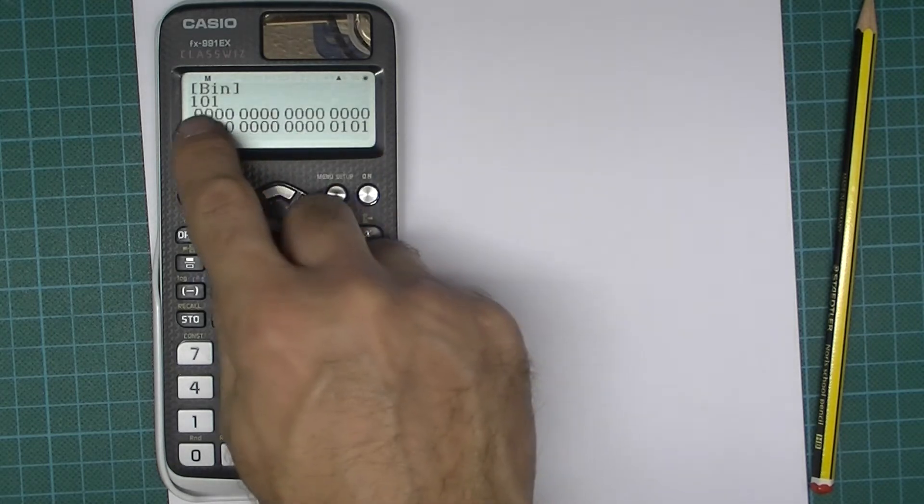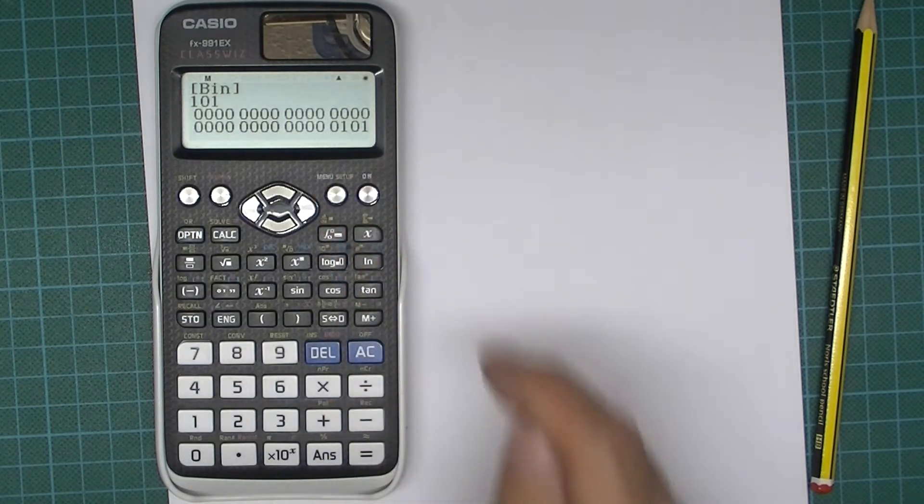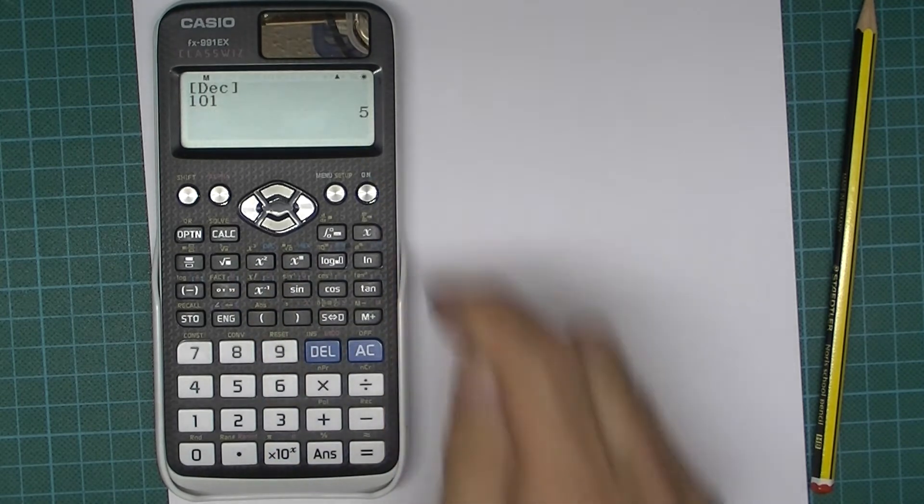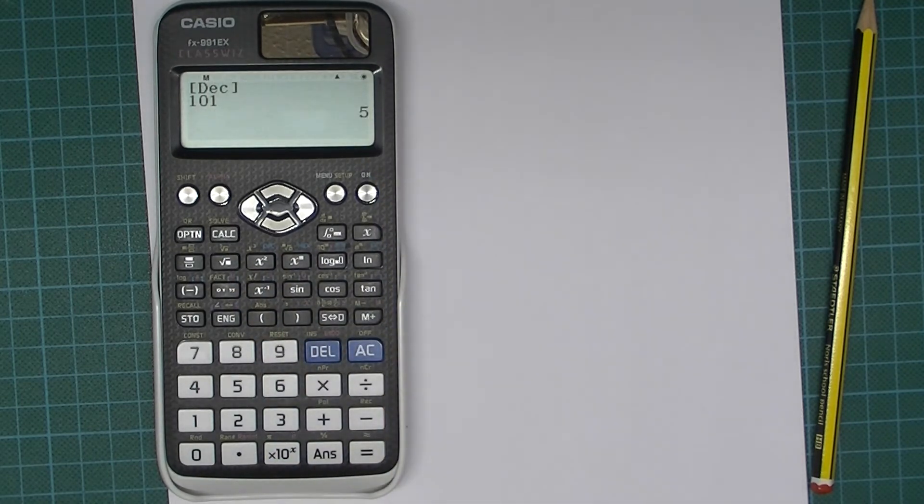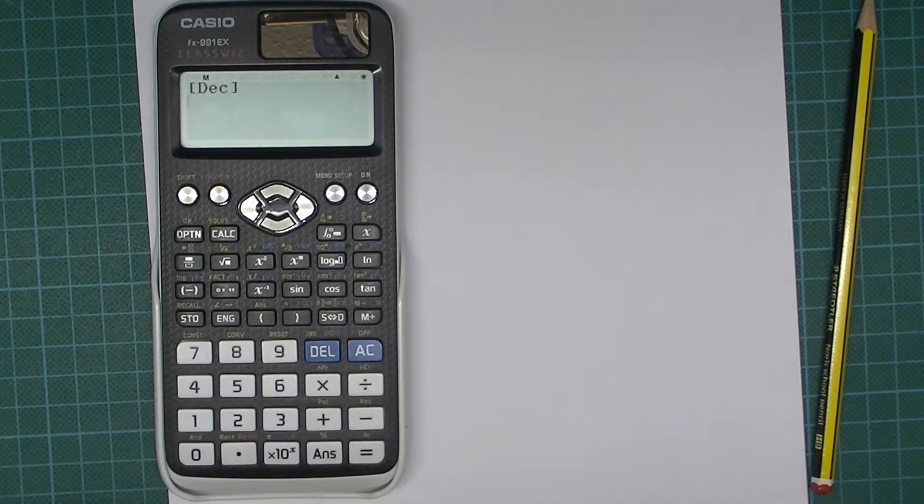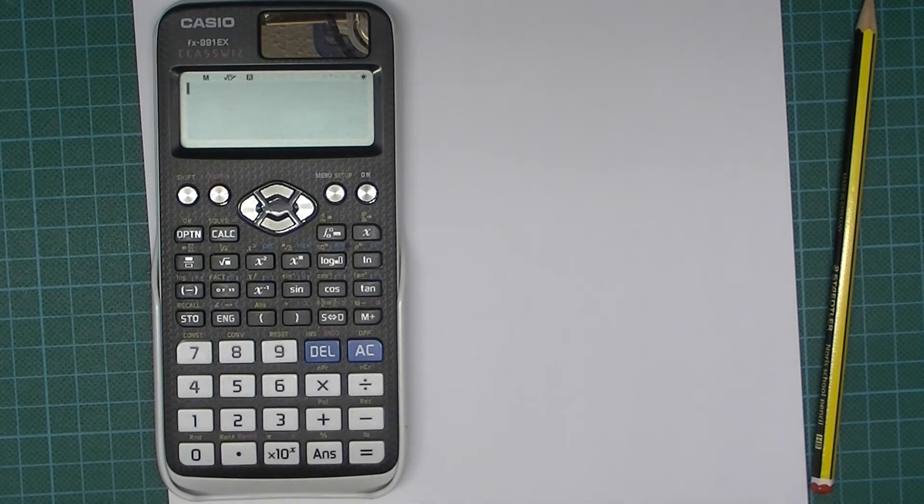So the binary representation of the 1, 0, 1 that we keyed in is 1, 0, 1 and then if we want to convert that into decimal, 5. OK, so all that seems OK. Let's just go back and then we're back into normal mode.